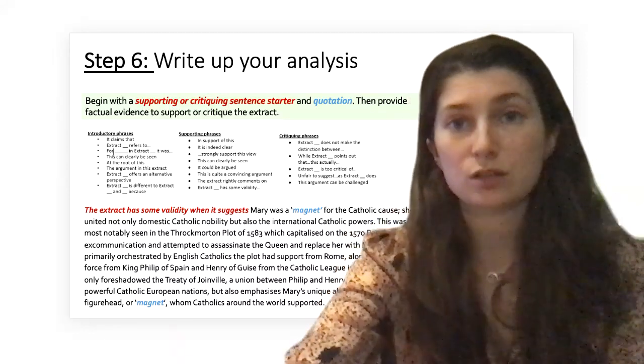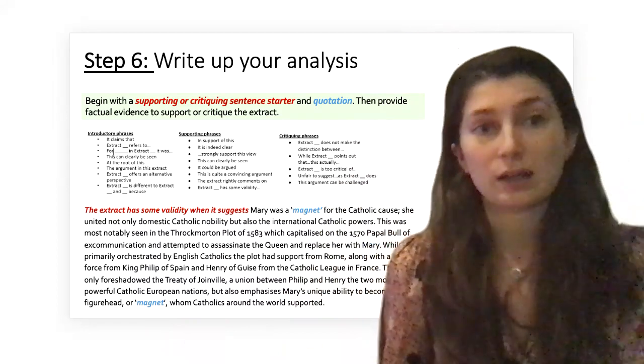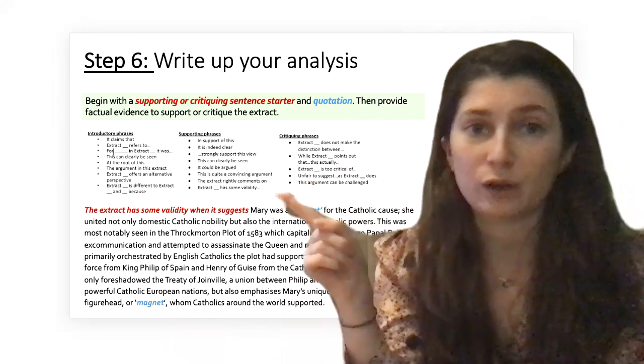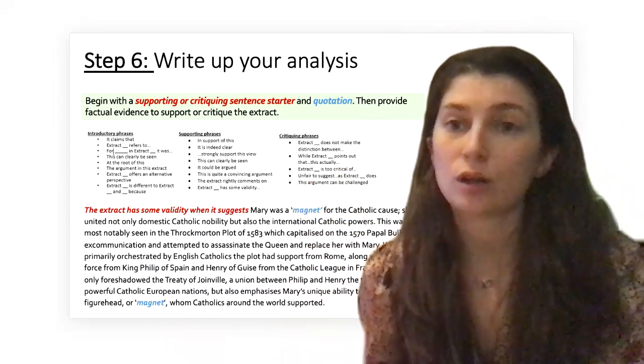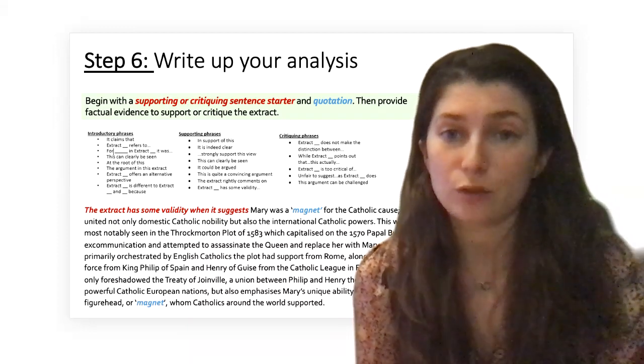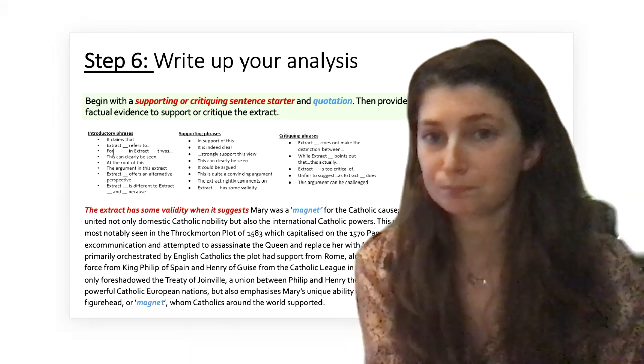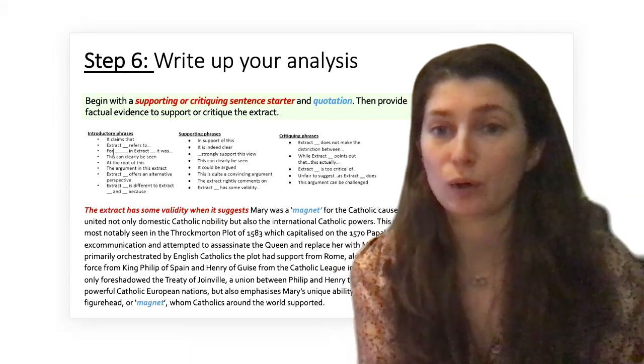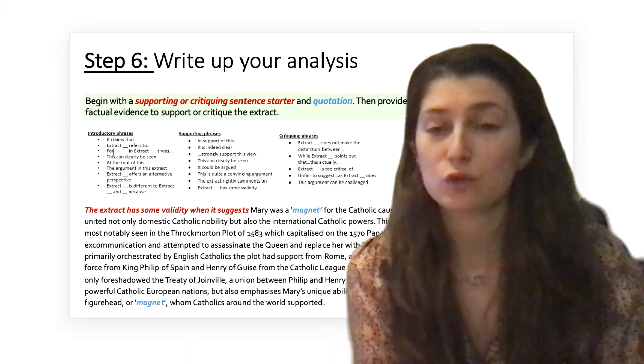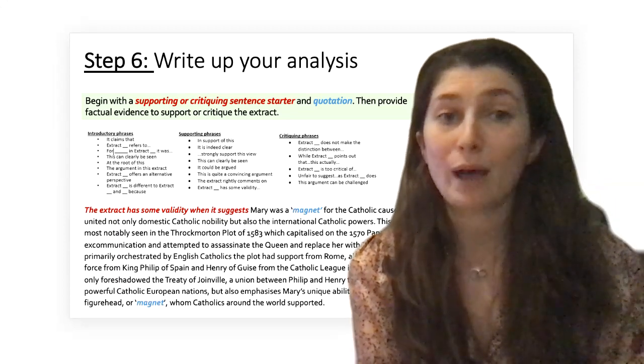After that it's a case of providing the best evidence you have and writing it up in a sophisticated, fluid way. I'll read out what I've written: 'The extract has some validity when it suggests Mary was a magnet for the catholic cause. She united not only domestic catholic nobility but also the international catholic powers. This was most notably seen in the Throckmorton plot of 1583, which capitalized on the 1570 papal bull of excommunication and attempted to assassinate the queen and replace her with Mary. Whilst primarily orchestrated by English catholics, the plot had support from Rome along with a joint force from King Philip of Spain and Henry of Guise from the Catholic League in France. This not only foreshadowed the Treaty of Joinville—a union between Philip and Henry, the two most powerful catholic European nations—but also emphasizes Mary's unique ability to become a figurehead or magnet whom catholics around the world supported.'